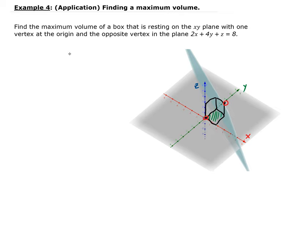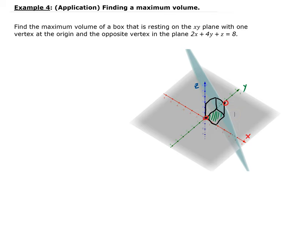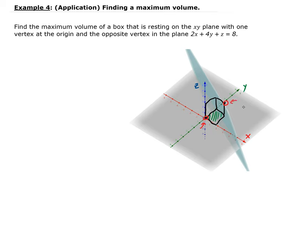This is the x, y, z coordinate system. Here's the box I drew in. So we want to find the maximum volume with respect to the vertex that's directly diagonally opposite of the origin. The origin is here and the other point, which is directly diagonally across, is sitting in the plane.